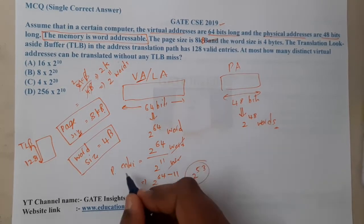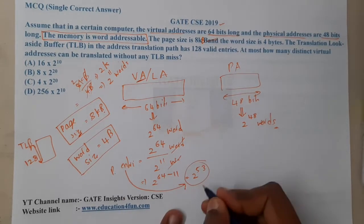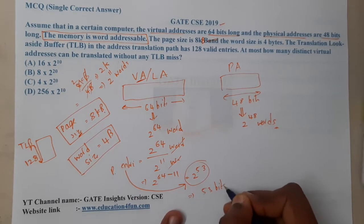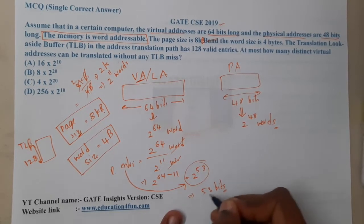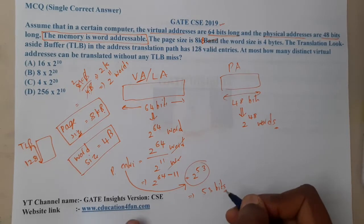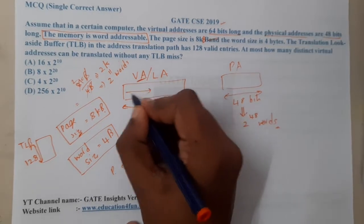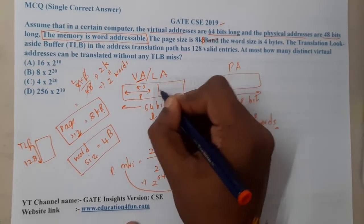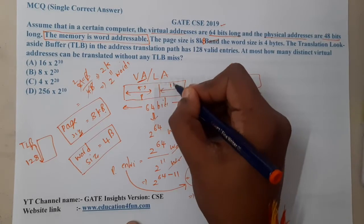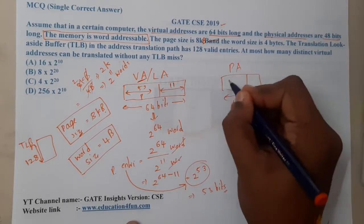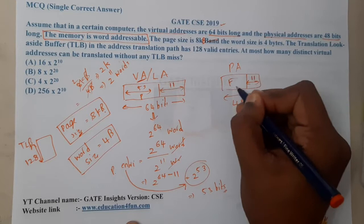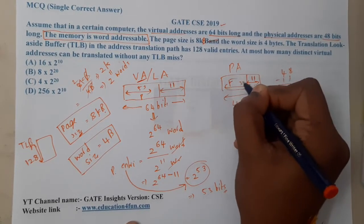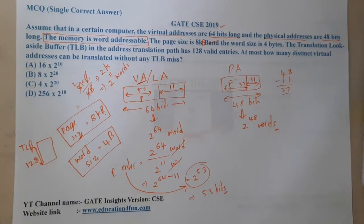In terms of bits, the page number field is 53 bits and the offset field is 11 bits in the virtual address. For the physical address, the offset is 11 bits and the frame number is 48 minus 11 = 37 bits.